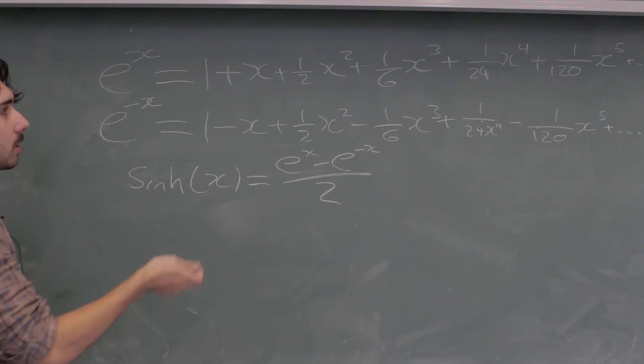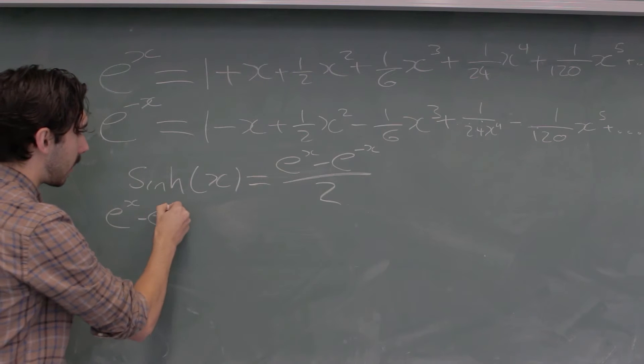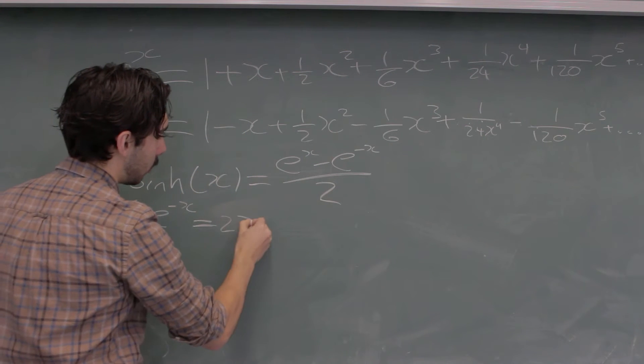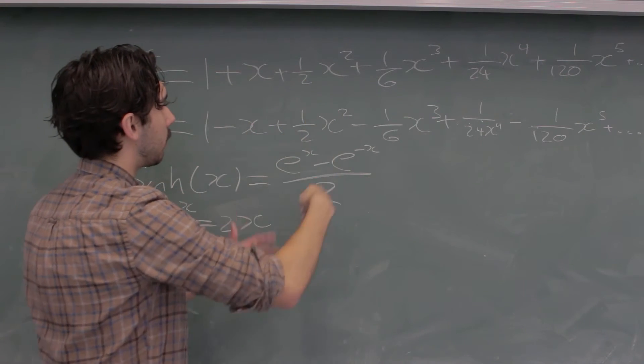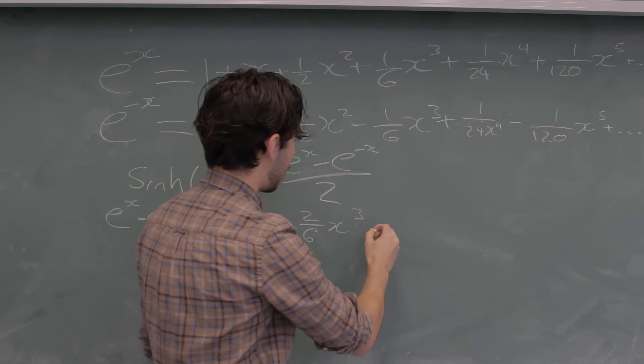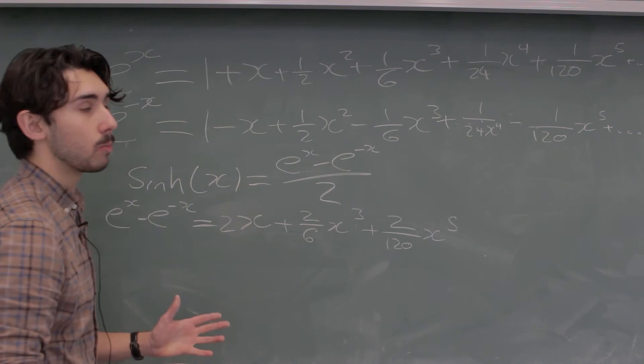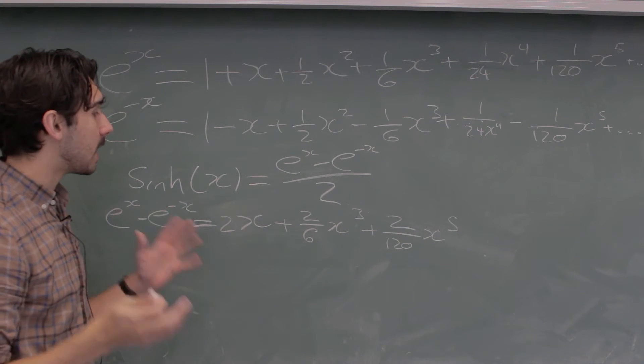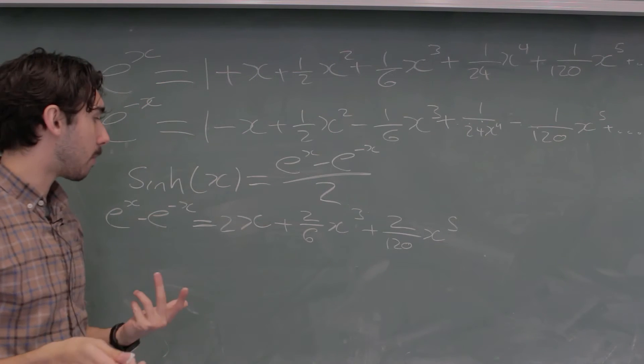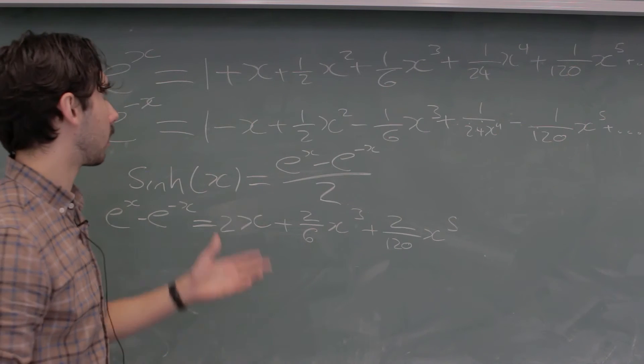So all we do is we just do the first equation minus the second term by term, it's really that simple. So the Maclaurin series for e to the x minus e to the minus x, we'll half it at the end, will be this. 1 minus 1 is 0, so that gets ignored. x minus minus x is positive 2x. All of the even powers disappear, so I won't even mention it. You then have a plus 2 over 6 x cubed, and then plus 2 over 120 x to the power of 5. And you can see that's happening, and we could do this with more terms if you want, but clearly what's happening is that the odd power terms are doubling from the original e to the x, and the even power terms are disappearing.